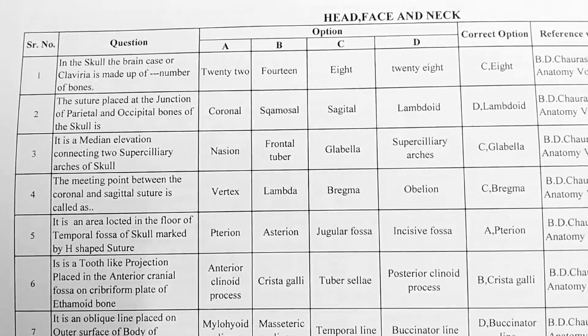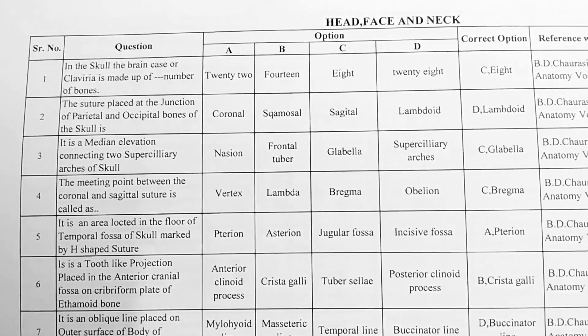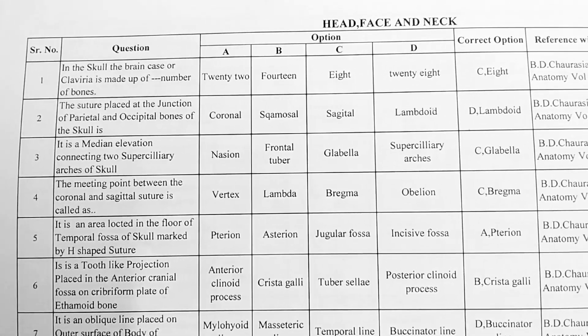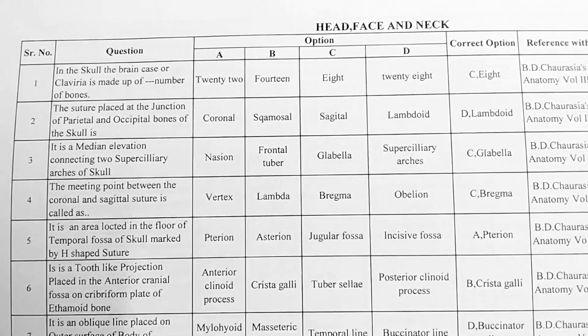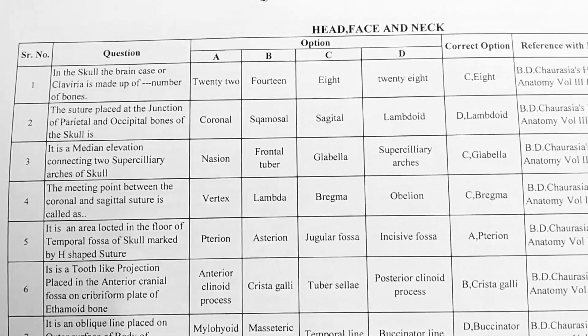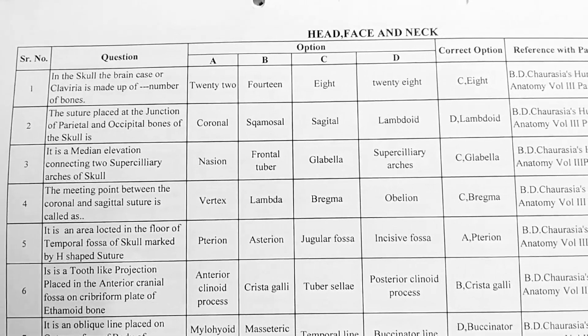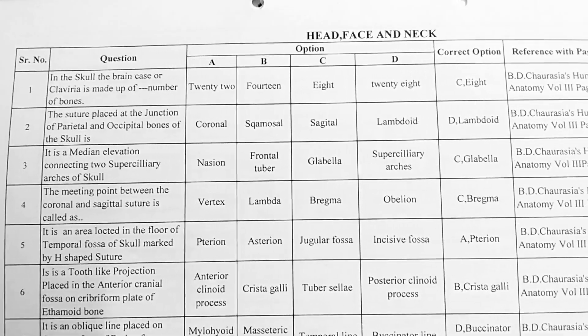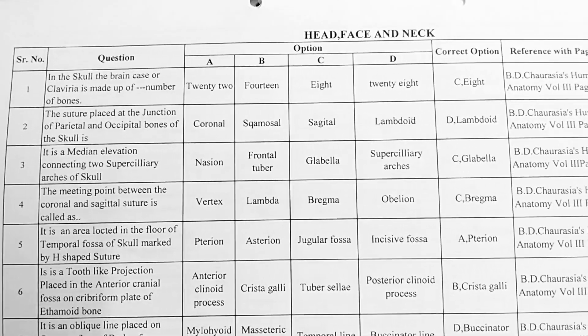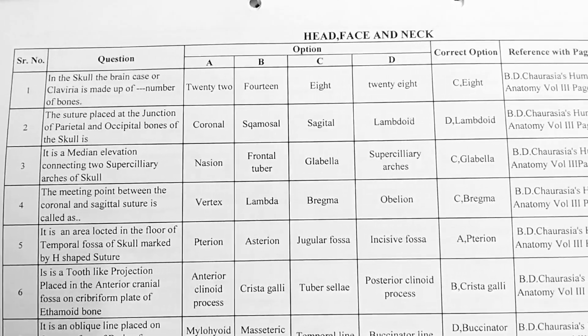Question. In the skull, the brain case or calvaria is made up of how many bones? Option A: 22, B: 14, C: 8, D: 28. Correct option is C, 8.